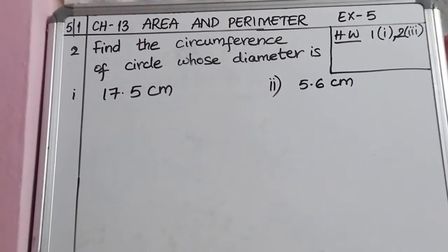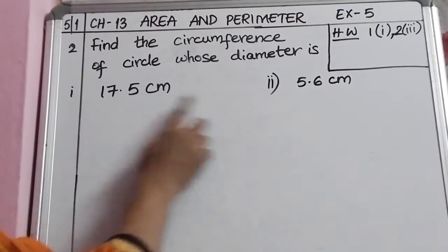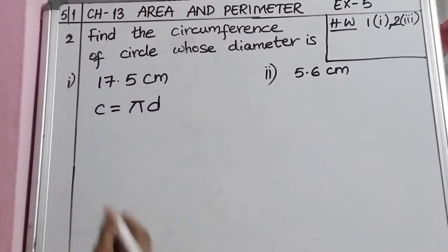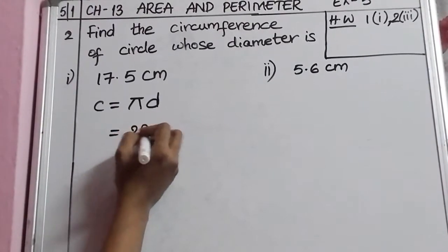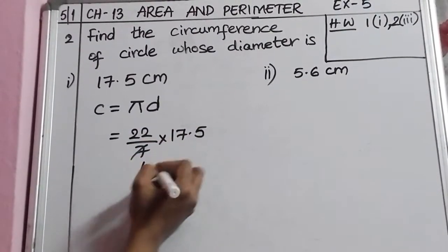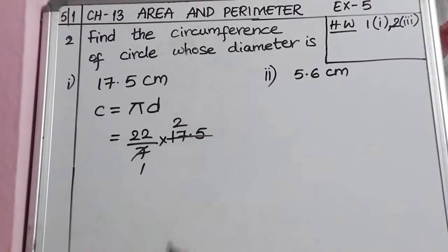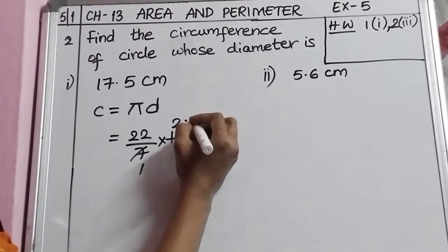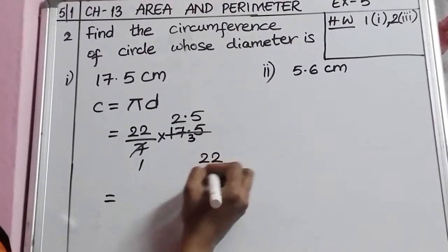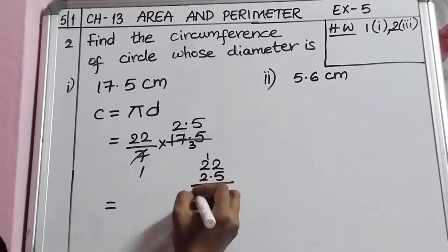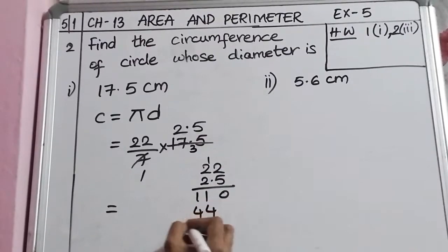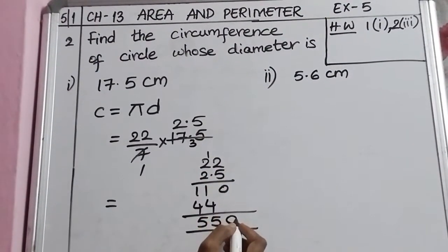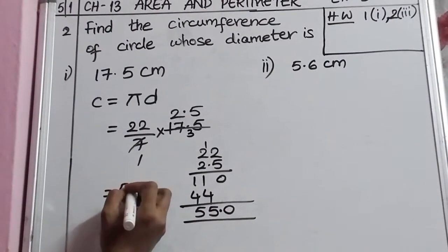Let us do Problem 2: Find the circumference of the circle whose diameter is given. The first bit is 17.5 centimeters. Since diameter is given, we use C = πD = (22/7) × 17.5. Cancelling: 7 goes into 17.5 giving 2.5. Then 22 × 2.5: 5 × 2 = 10, 5 × 2 = 10 (carry 1), 2 × 2 = 4, 2 × 2 = 4, giving 55.0. After one decimal digit, we get 55 centimeters.